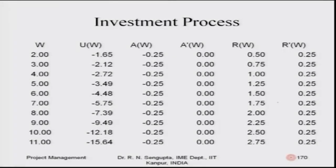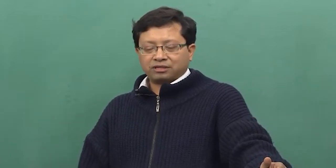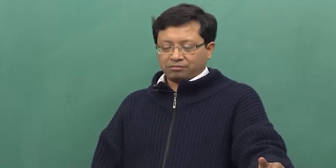Again extending the same example for the exponential utility function: values of w are in the first column, u(w) in the second column, and the third and fourth columns for u prime and u double prime are skipped for your practice. Based on that, you find the a values in the third column shown in slide 170. The a prime values are all zero as mentioned, r is a multiplied by w, and r prime is again a constant equal to a — confirming constant absolute risk and increasing relative risk aversion.